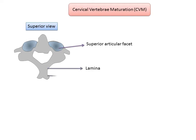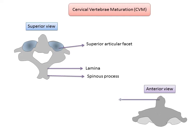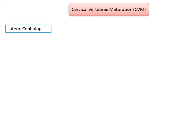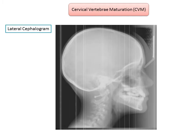The spinous process is attached to the main body via the lamina. In an anterior view, the vertebra appears roughly triangular with an extension at the top known as the dens, which fits into the vertebra overhead. The lateral extensions are the transverse process, the inferior border is the inferior articular process, and the main part is formed by the body.